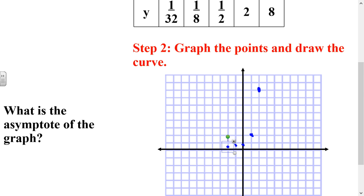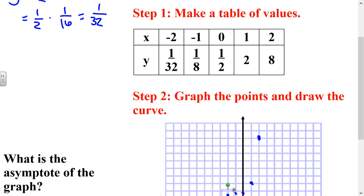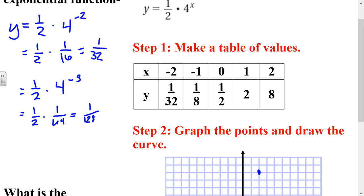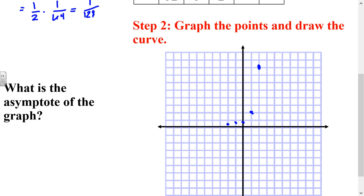That's because exponential growth is the fastest type of growth that there is in the world. If we kept going in the negative direction and plugged in like negative 3, we'd get one-half times 1 over 4 cubed, which is 1 over 64, giving us 1 over 128. The value keeps getting closer and closer to 0 but never actually becomes 0 and never becomes negative. So the asymptote of this graph is y equals 0, also known as the x-axis.